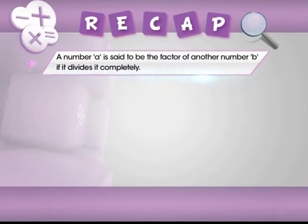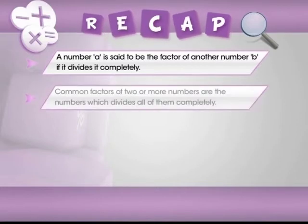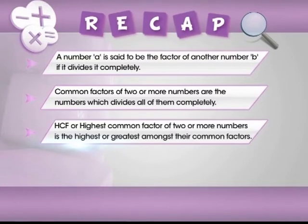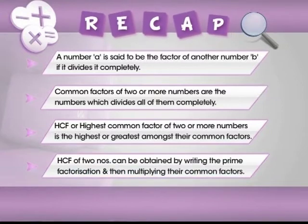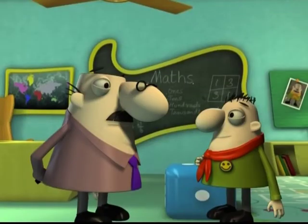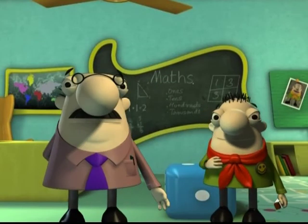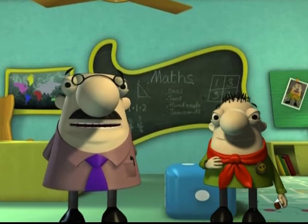In this module, we have learnt that a number A is said to be the factor of another number B if it divides it completely. Common factors of two or more numbers are the numbers which divide all of them completely. HCF or Highest Common Factor of two or more numbers is the highest or greatest amongst their common factors. HCF of two or more numbers can be obtained by writing the prime factorization of the numbers and then multiplying their common factors. HCF of two or more numbers is the highest of their common factors! Bravo, Kelsey! I love maths! So, kids, we will take a leave now and see you again with some more Mathemagic next time!